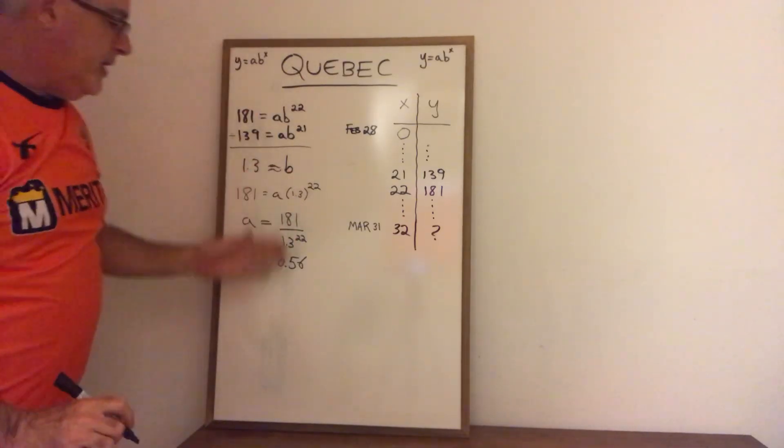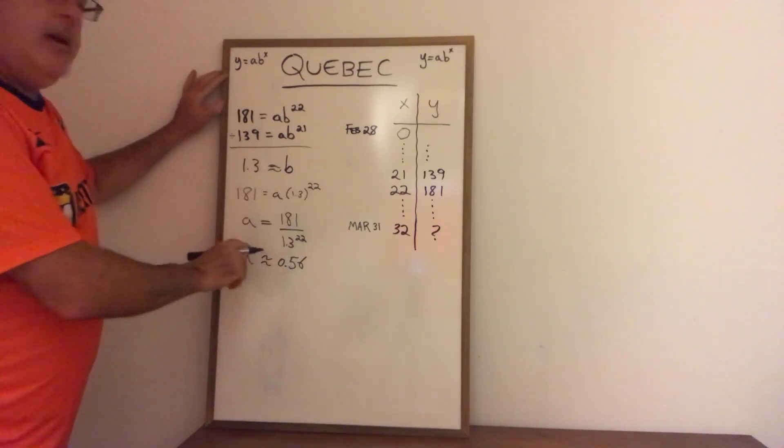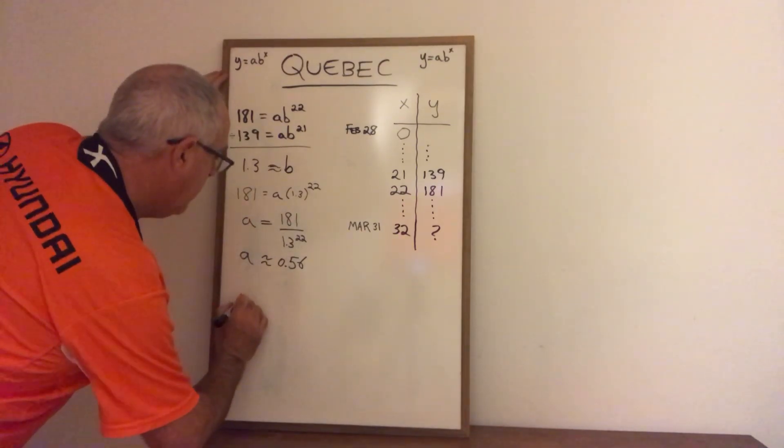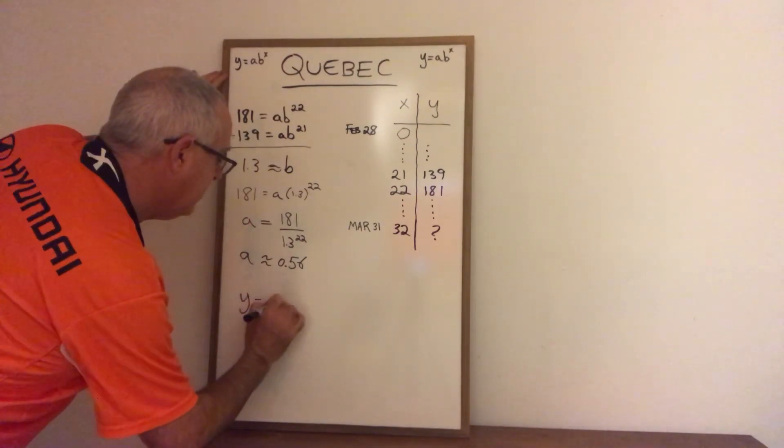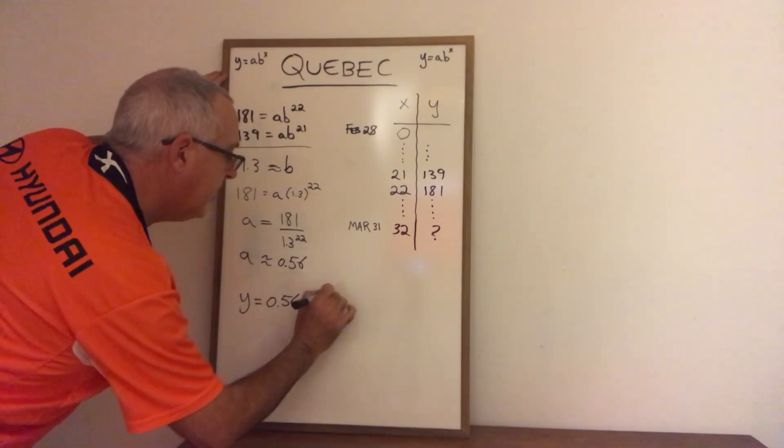Both the b value and the a value are approximations because of rounding but they give me the values I need to write an equation which is y equals 0.56 times 1.3 to the x.